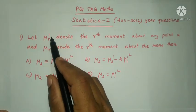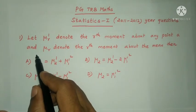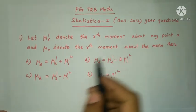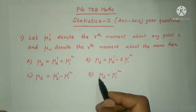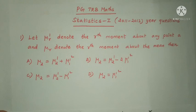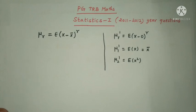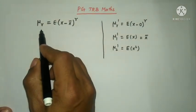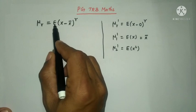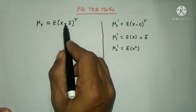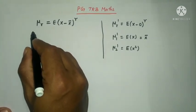First question: μᵣ (mu r dash) denotes the r-th moment about any point A, and μᵣ denotes the r-th central moment about the mean. The formula for the central moment is: μᵣ = E[(X - X̄)ʳ]. When r = 2, we get μ₂.